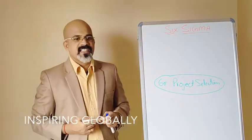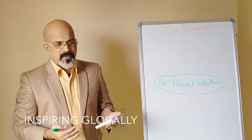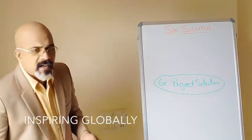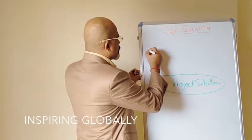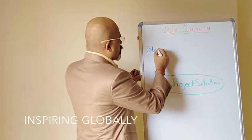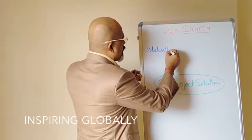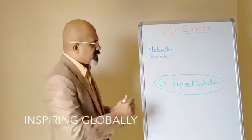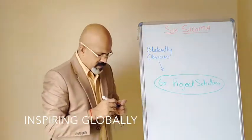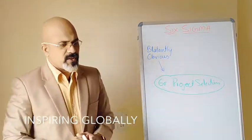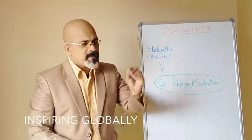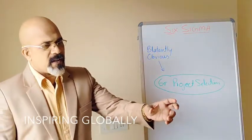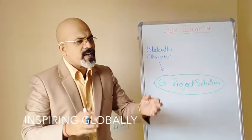How do you select a Six Sigma project? There are a couple of ways. One very common way is called 'Blatantly Obvious.' As the name suggests, blatantly obvious means something which is very obvious — obvious to everyone in the organization, top to bottom. Everyone knows that that particular problem exists.